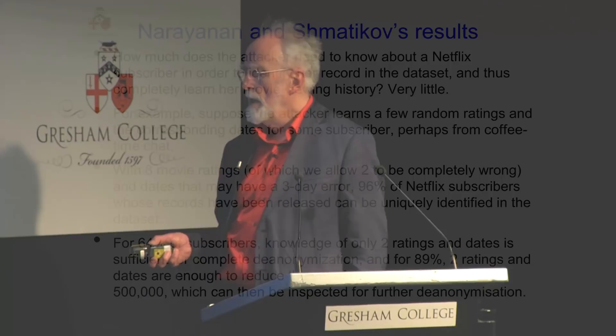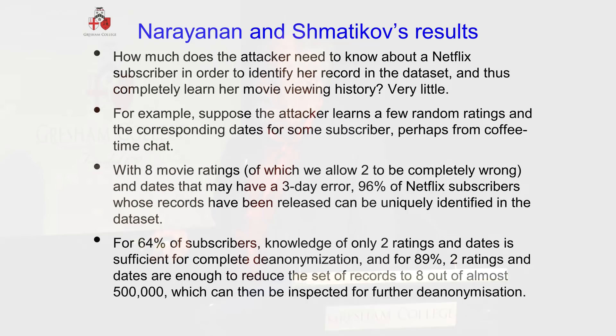It was a surprising result and it's kicked off a big amount of research work in the area of re-identification. 64% of subscribers — you only need two ratings and dates. And for 89%, two ratings are enough to reduce the set of records to eight records out of the nearly 500,000 records. And of course, you can then look at those eight records and add in any additional information you've got to de-anonymise.